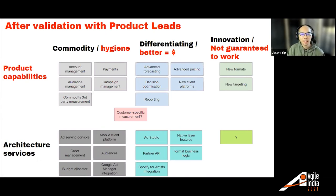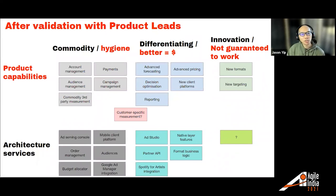When we said 'commodity,' saying 'oh, this is hygiene — what are hygiene product capabilities?' Talking to product leads, they were able to translate from the technical service to how they would talk about product capabilities and how customers would understand it. That clarified that differentiating meant things we know that if we do them, they convert to money — relatively well known, so we're relatively confident — versus innovation capabilities, which we're not sure work yet. We don't know if customers care, it's very experimental. That helped clarify where things go.